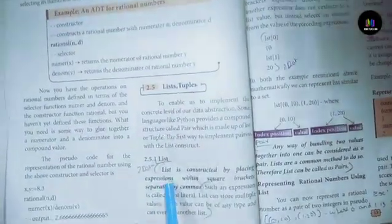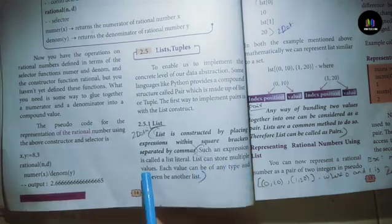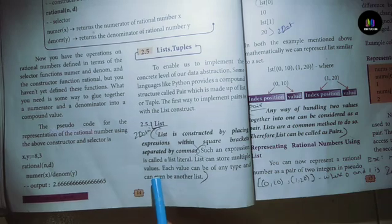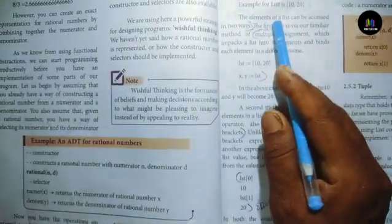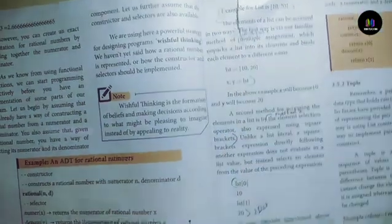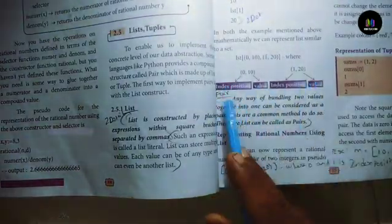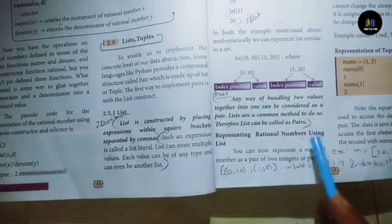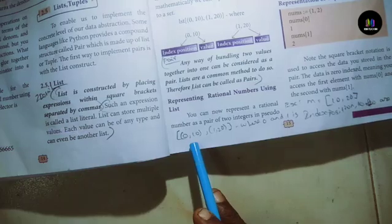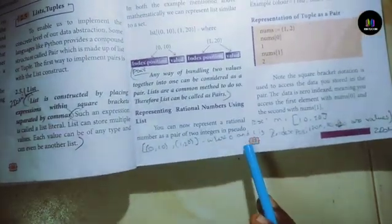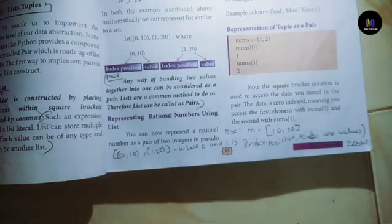List is constructed by placing expressions within square brackets separated by commas. Such an expression is called a list literal. List can store multiple values, each value can be of any type, and it can even be another list. Example: m equals 10, 20. Next: [0] equals 10, [1] equals 20, where 0 and 1 are index positions and 10, 20 are values.